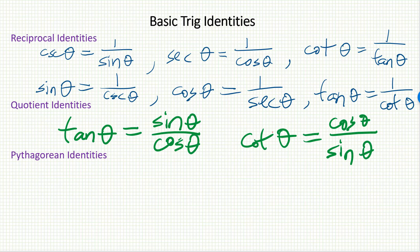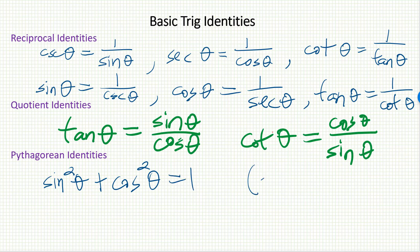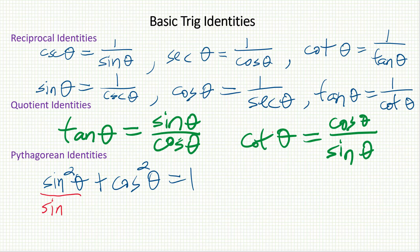The third category is the Pythagorean identities. The most famous trig identity is sine squared theta plus cosine squared theta equals 1. Remember, sine squared theta means the entire sine theta ratio is being squared — it's not the angle being squared. There are two other Pythagorean identities that can be obtained from this first one. Look at what happens if we divide every term by sine squared theta.